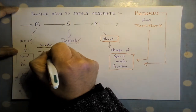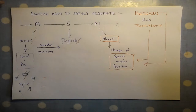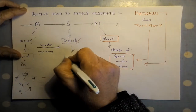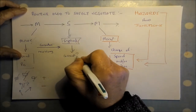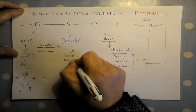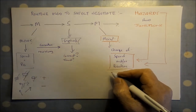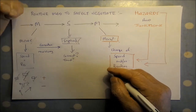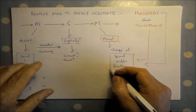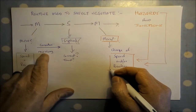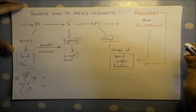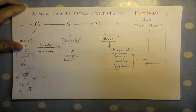Whilst you are checking your mirrors, you need to consider whether a signal is necessary. Signals need to be the correct signal, and they also need to be timed correctly. A signal given too early can be confusing, and a signal given too late is no good and potentially frustrating. So you're checking your mirrors and considering if a signal is necessary — it's got to be the correct signal and timed correctly.